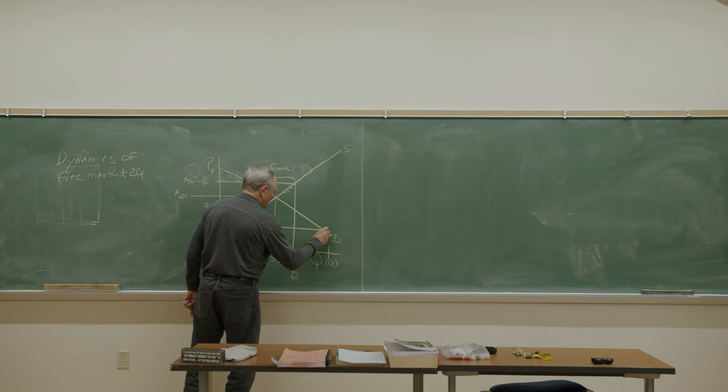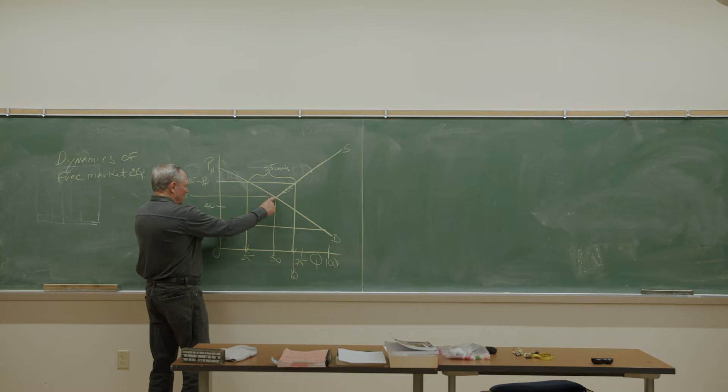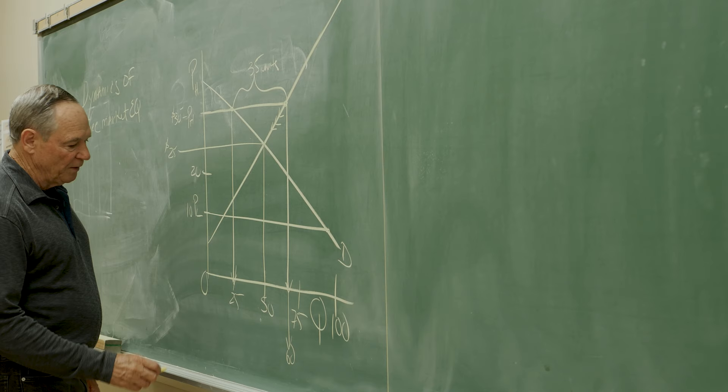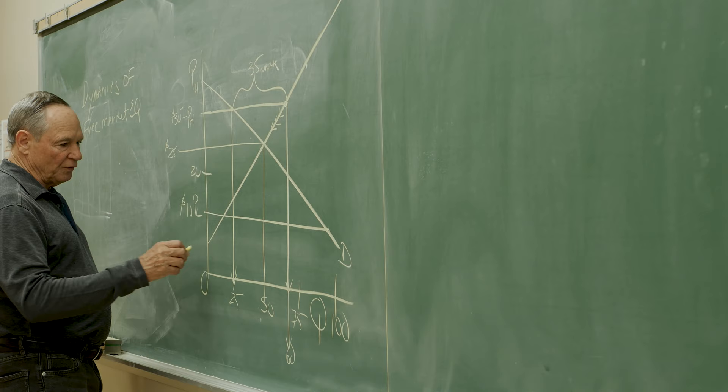At $10, we have discouraged everybody in the supply curve above $10 along the supply curve from producing the good. So instead of producing 50, which would be the equilibrium, at this low price of $10, we would supply about 12 units.